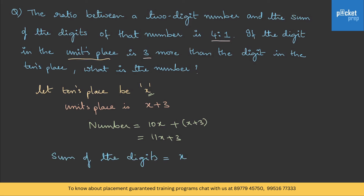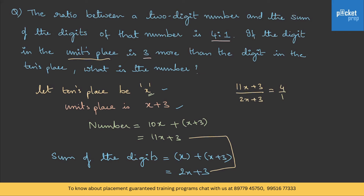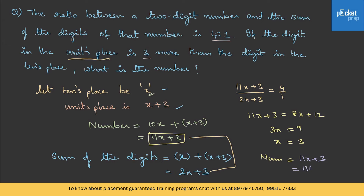The sum of the digits is x + (x + 3) = 2x + 3. The ratio between the number and the sum of digits is 4:1, so (11x + 3) / (2x + 3) = 4/1. Solving: 11x + 3 = 8x + 12, so 3x = 9, x = 3. The number is 11(3) + 3 = 36. That's the answer. Let's try one more.